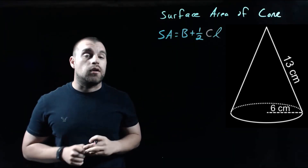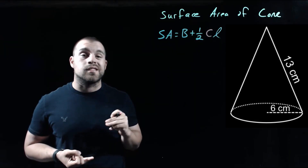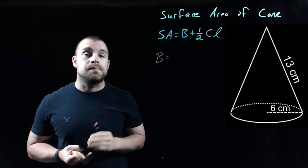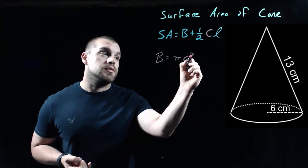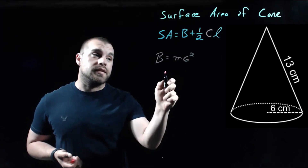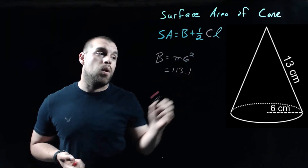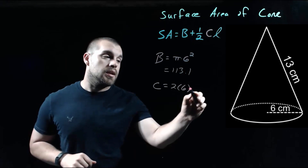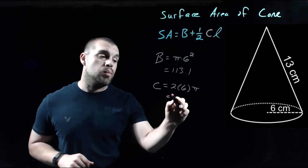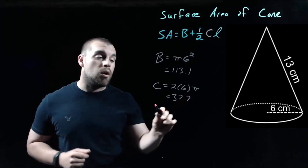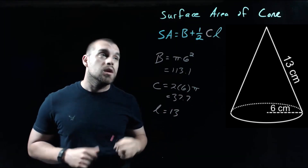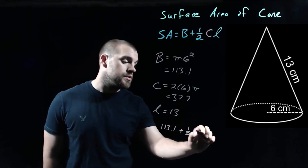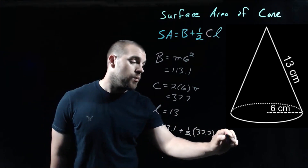Looking at this example, we've got a cone with a radius of 6 centimeters and a slant height of 13. First we find the area of the base: since it's a circle, that's pi r squared — pi times 6 squared. 6 squared is 36, and 36 times pi gives us about 113.1. For the circumference, we do 2 times the radius times pi: 2 times 6 is 12, and 12 times pi gives us about 37.7. Our slant height is 13. So we set up the formula: 113.1 plus one half times 37.7 times 13.